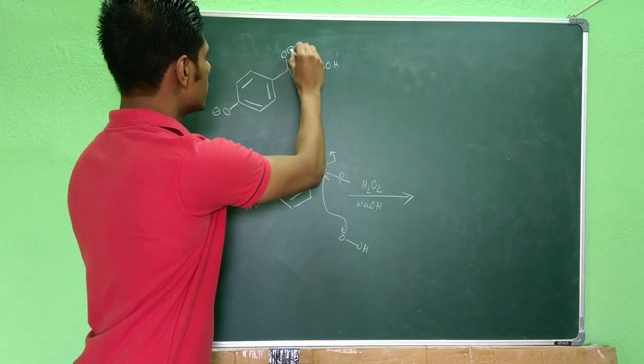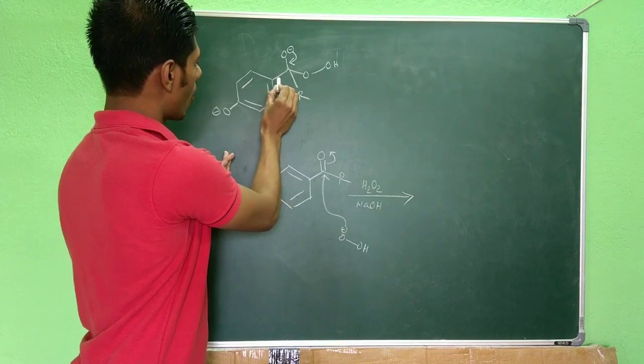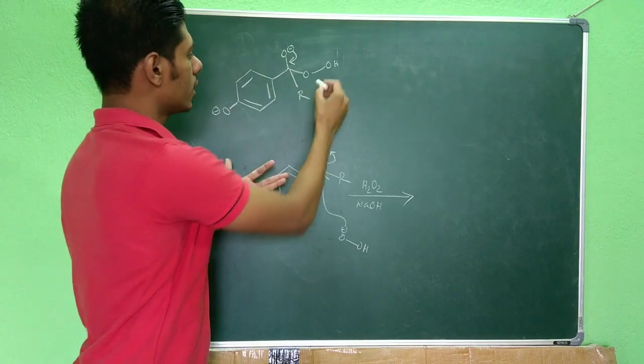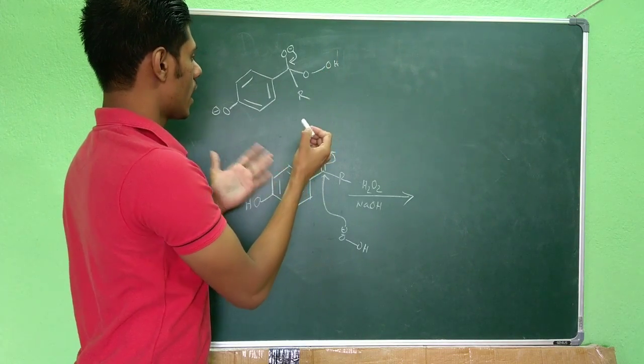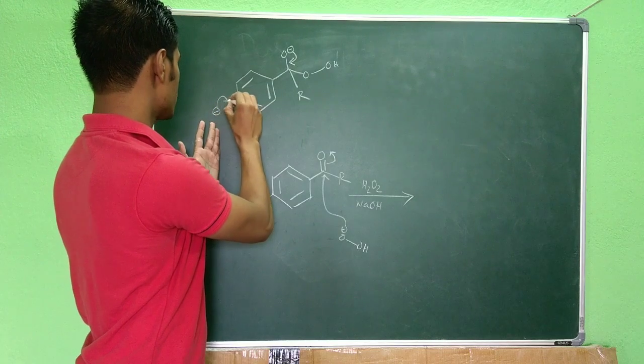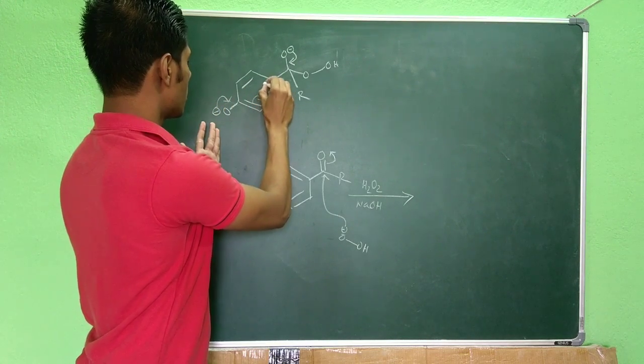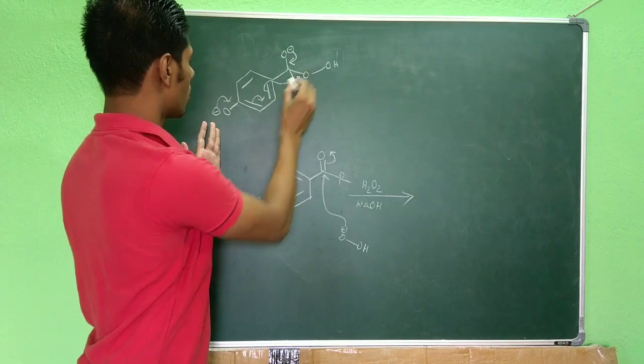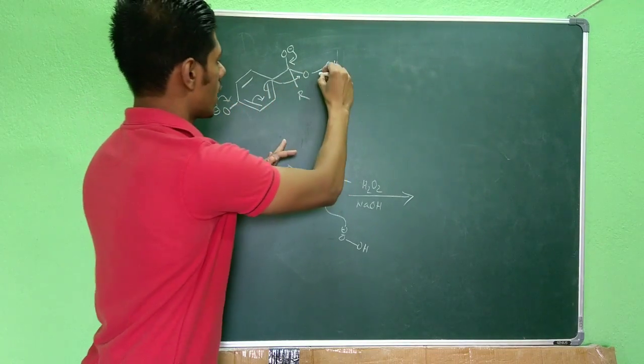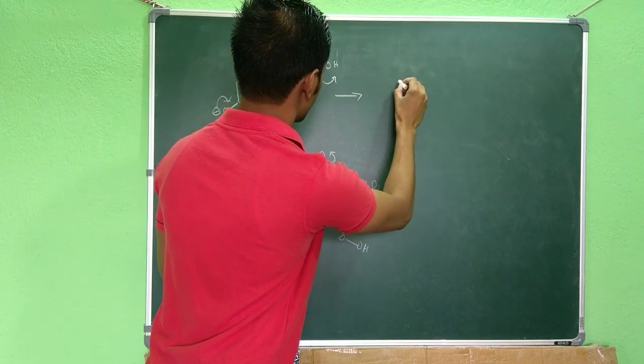Now you can see if this O minus pushes back, either this R group or this aromatic group, one of them can move, one of them can migrate, and this OH can leave. And you can see due to the presence of this O minus which can push its electron density into this ring, the migrating aptitude of this particular phenyl ring or this aromatic ring increases, and that's why this aromatic ring will migrate.